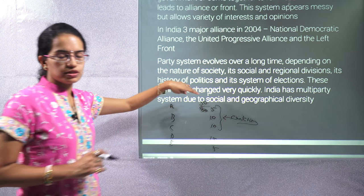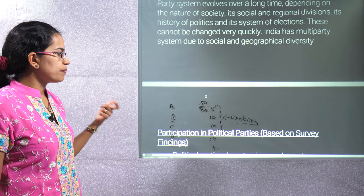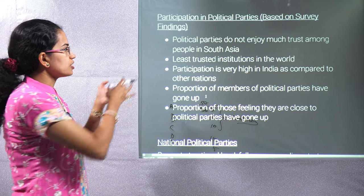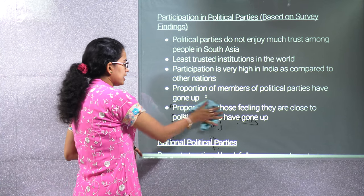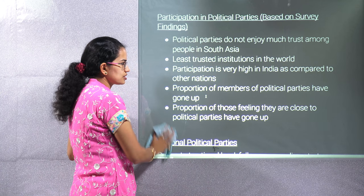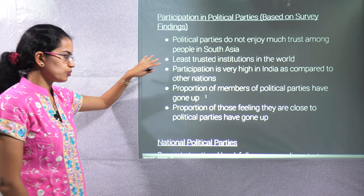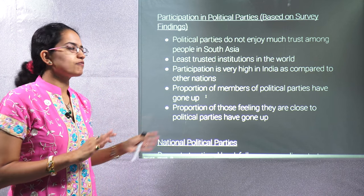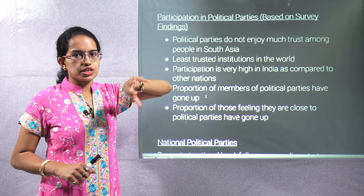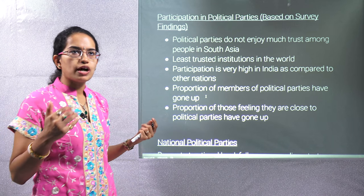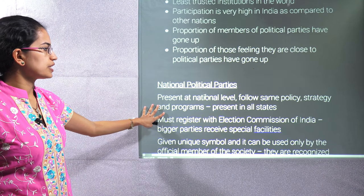In India in 2004, there were three major alliances: the National Democratic Alliance, United Progressive Alliance, and the Left Front. Each party evolves with a long history and its own ideology. A recent study revealed that political parties are the least trusted institutions in the world; however, participation in political parties in India is much higher compared to other nations, and membership has increased over time.